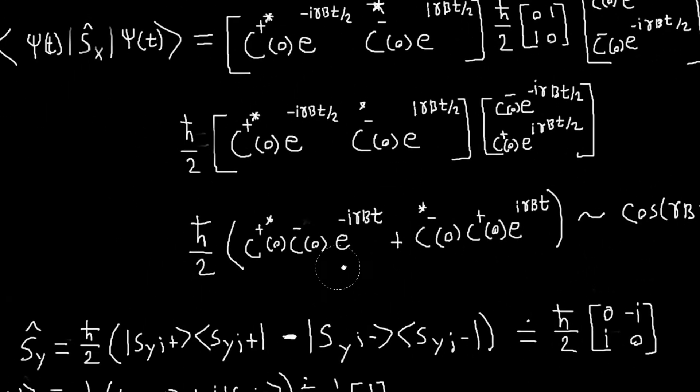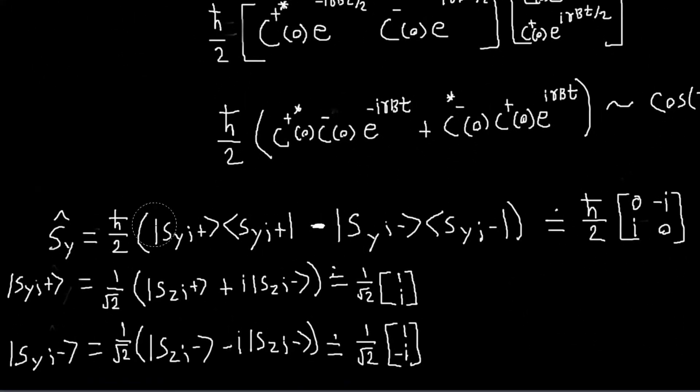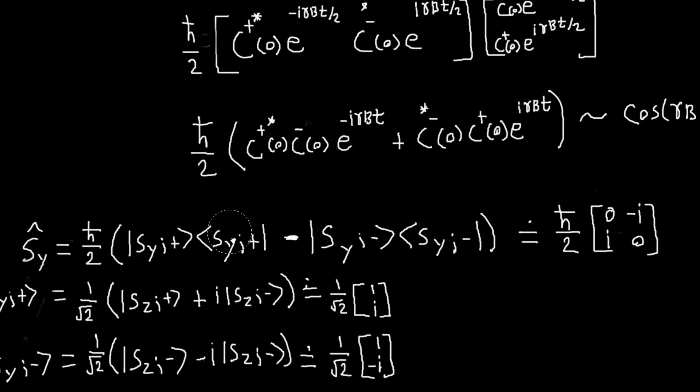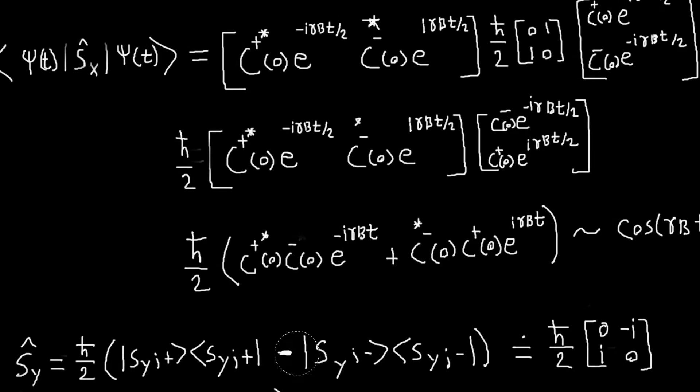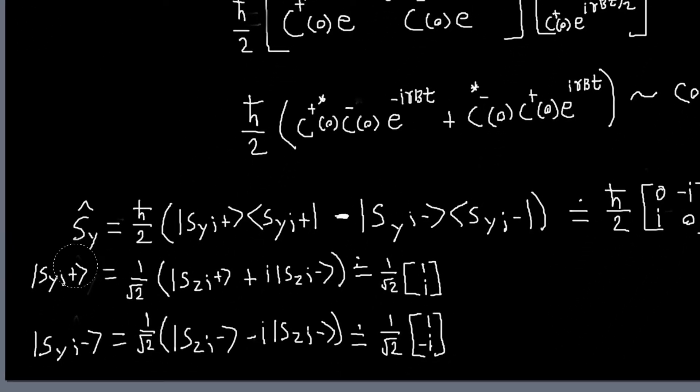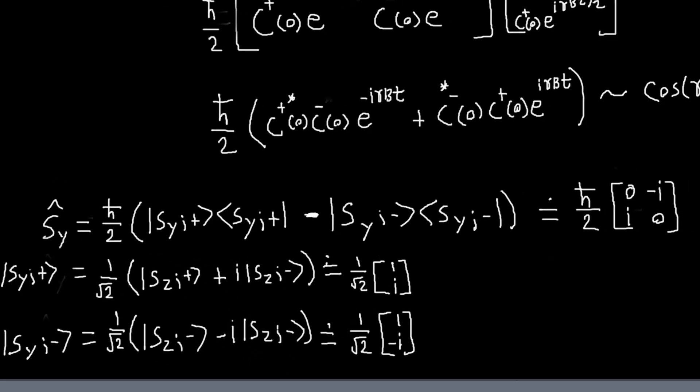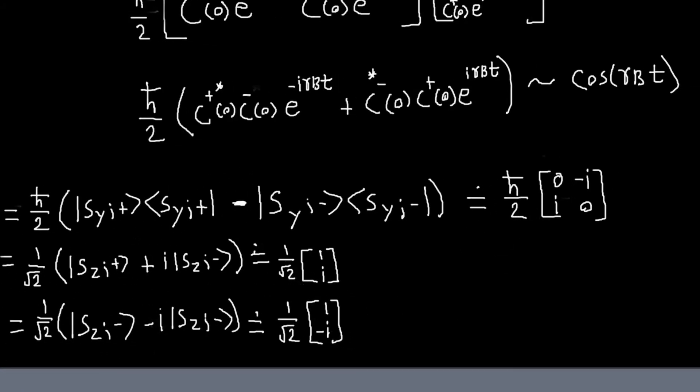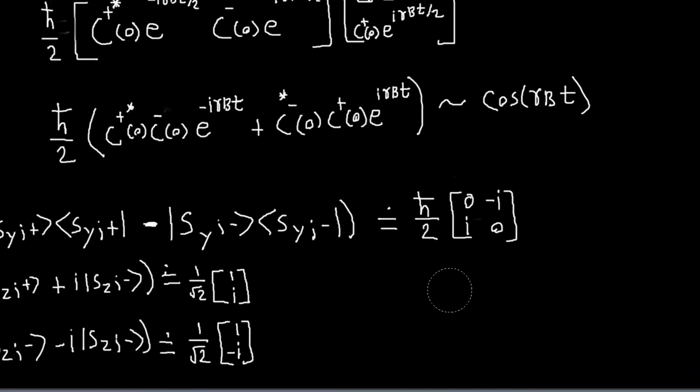And then I can do the exact same thing with my Sy operator. So now I want to compute the expectation value of Sy. And again, in the Sy basis, I know that I could expand my operator in terms of these outer products. And I said that my Sy kets can be expressed as these linear combinations of my Sz kets. And so you could do the same kind of thing, either work it out in the kets or work it out in the representations. And you would find that the matrix representation of my Sy operator in the Sz basis is this.